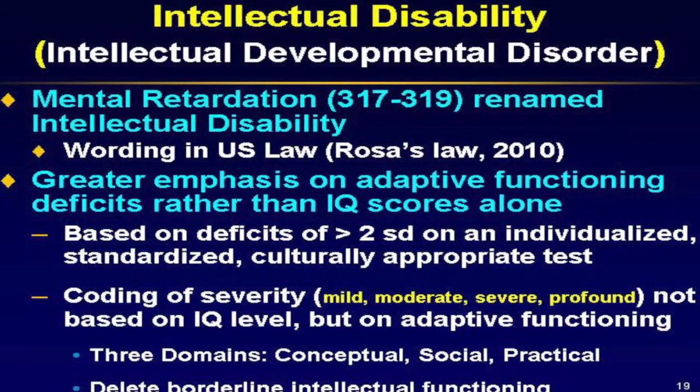No more borderline intellectual functioning. The definition is based on two different issues, with a greater emphasis on adaptive functioning rather than just IQ scores. To meet criteria, you need a deficit of two or more standard deviations on an individualized, standardized, culturally appropriate test of intellectual function. Severity coding is significantly based on adaptive functioning in three domains: conceptual, social, and practical. And no more borderline intellectual functioning.